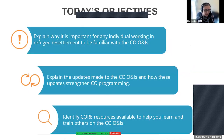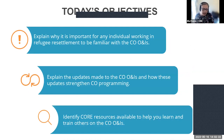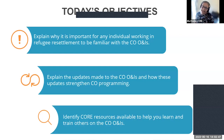I want to take a moment to explain today's objectives. This is part one of a two-part series on the cultural orientation objectives and indicators. Today, we're focusing on: explaining why it's important for any individual working in refugee resettlement to be familiar with the COONIs; explaining the updates made to the COONIs and how these updates strengthen CO programming; and identifying core resources available to help you learn and train others on the COONIs. Today's training is higher level, whereas next week we'll really delve into how to design CO programming around the COONIs.